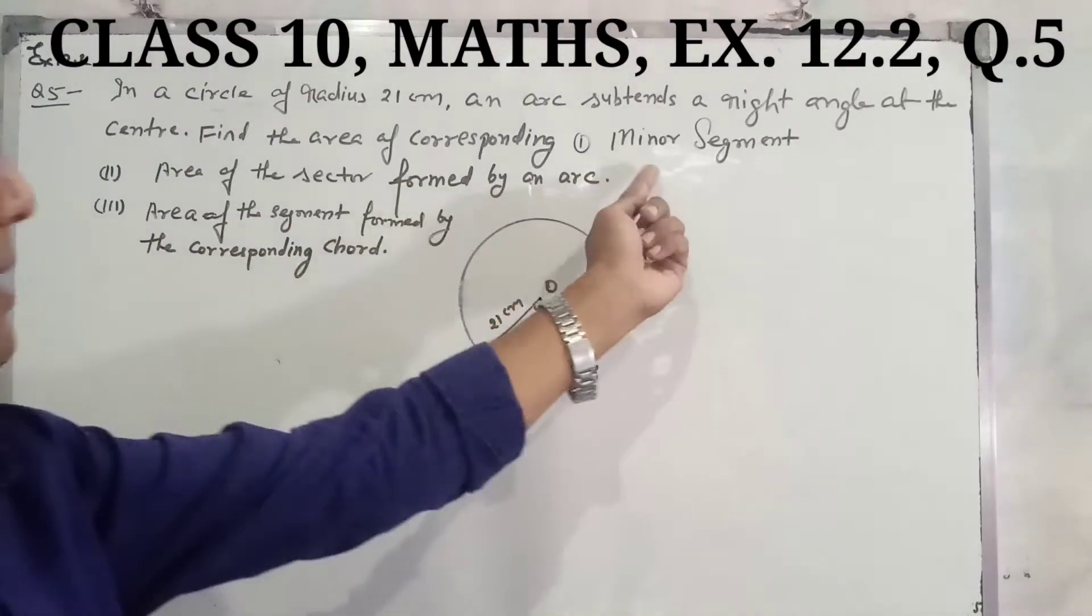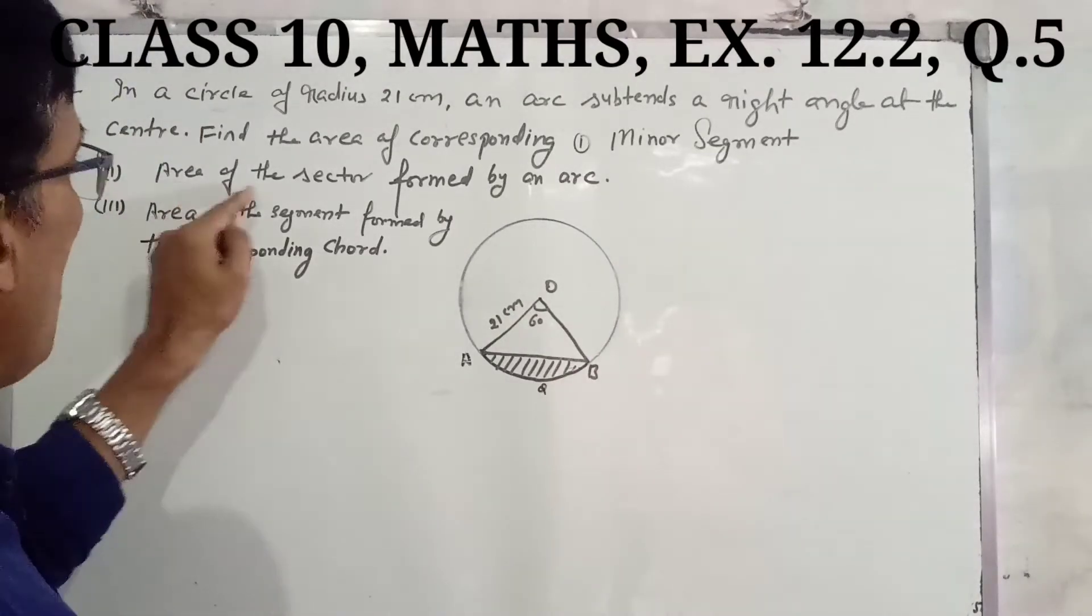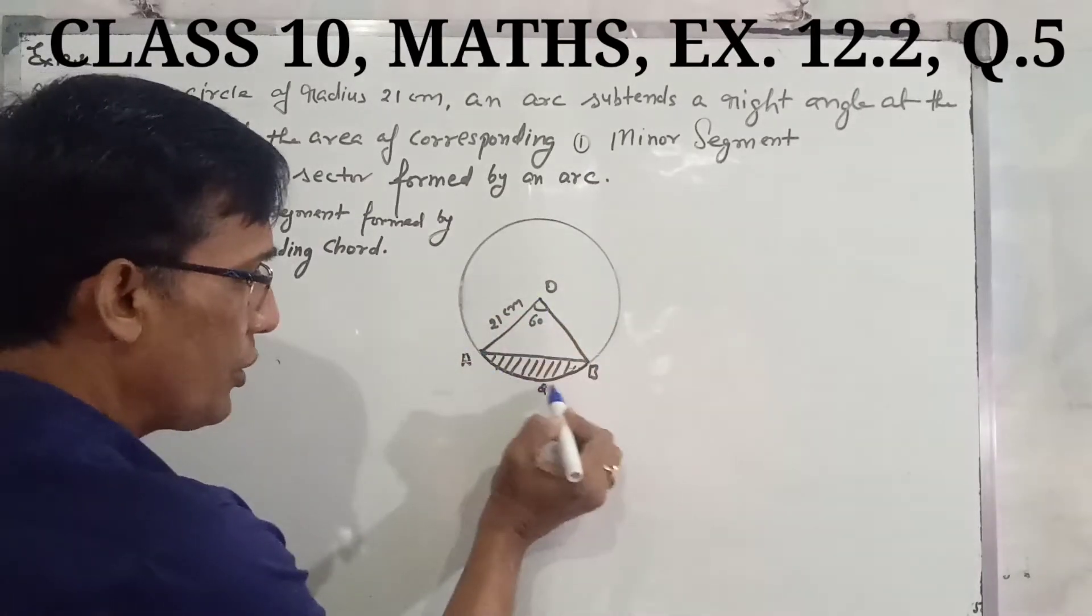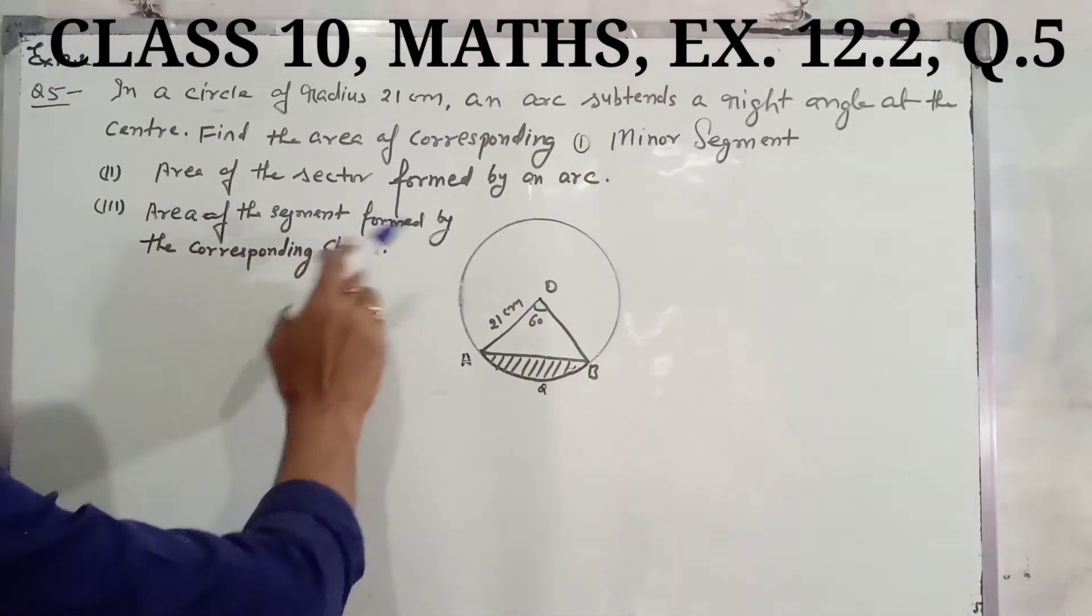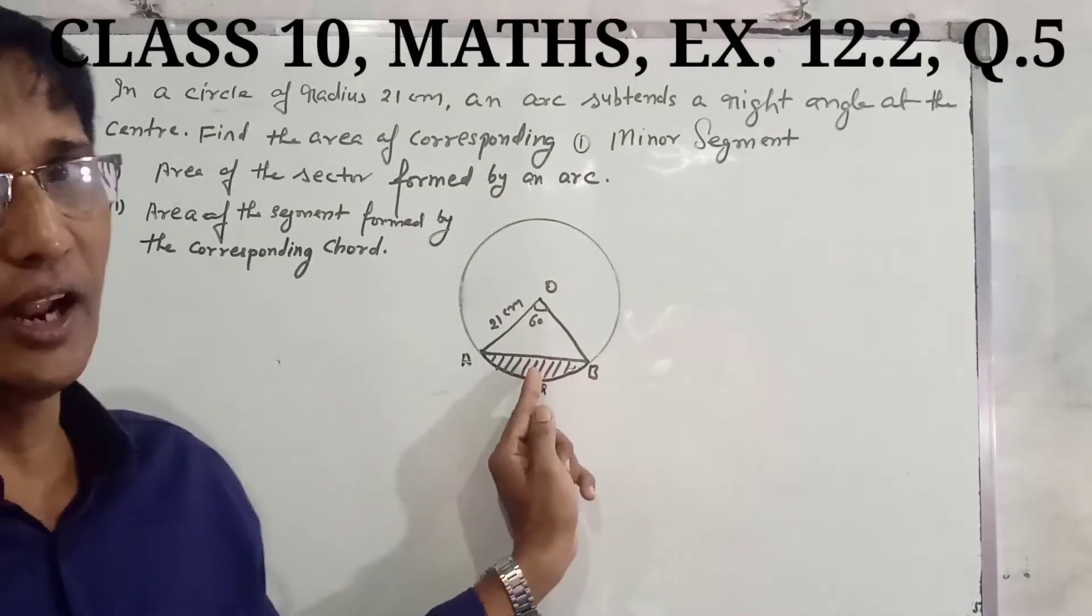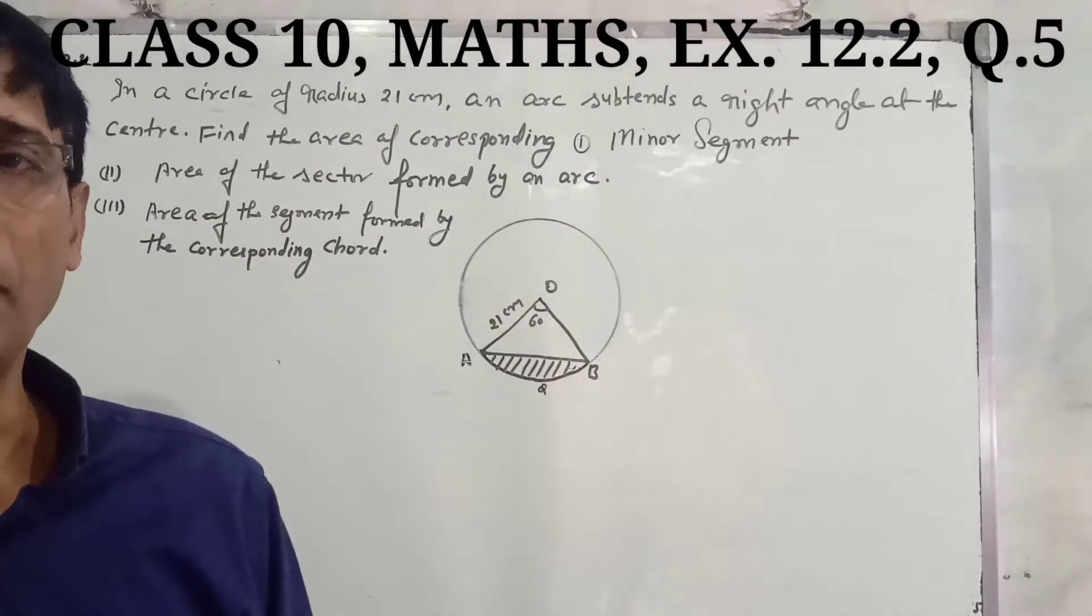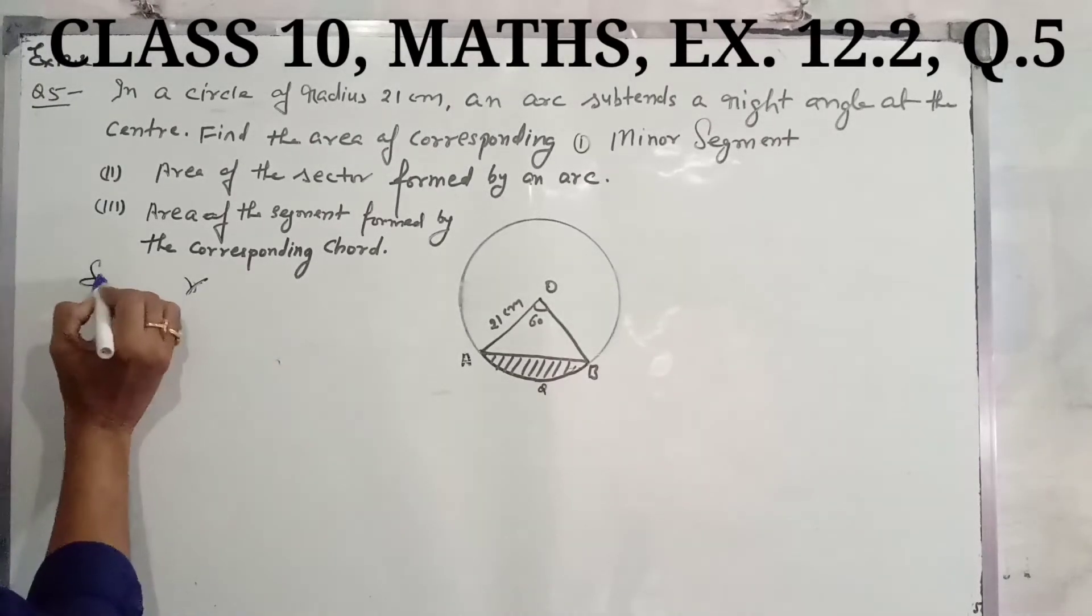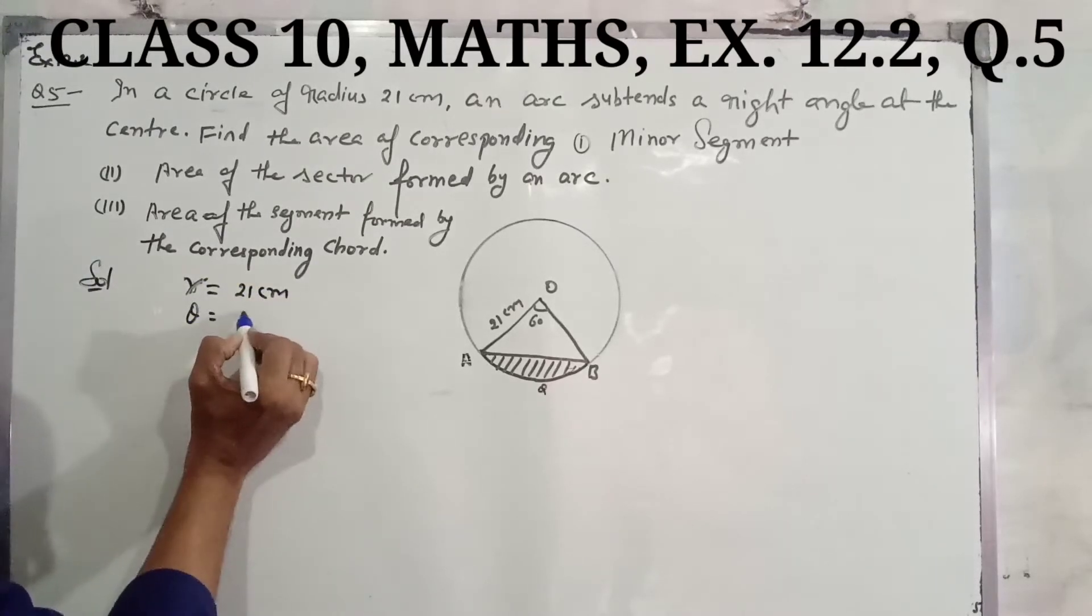We have to find the area of the sector formed by the arc and the area of the segment. So first we will do the minor segment. Here we have the radius given as 21 cm and the value of theta is 60 degrees.